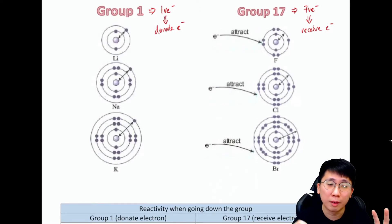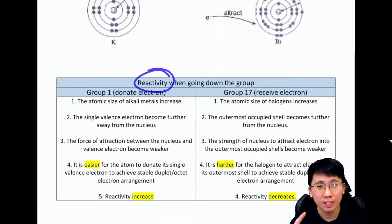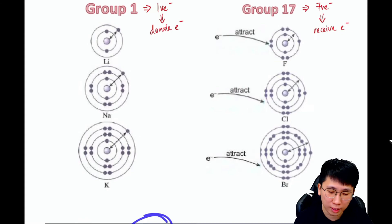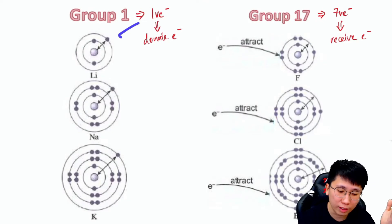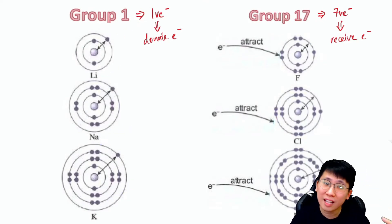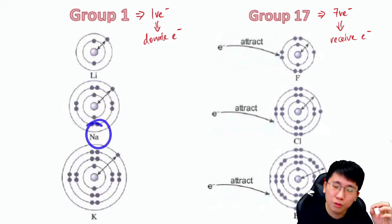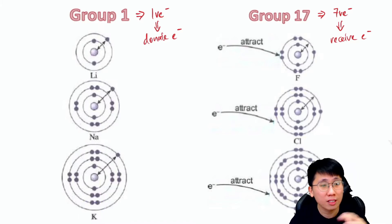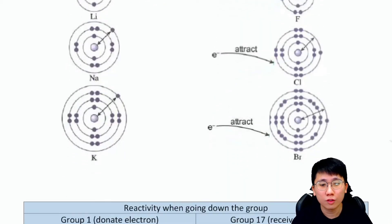The main question about these two groups is reactivity. If you take lithium, sodium, and potassium and throw them into water, you'll see different observations — hissing sound, burning in flame. Lithium reacts slowly, sodium reacts more vigorously, and potassium has the biggest reaction among the three, showing that different elements have different reactivity.